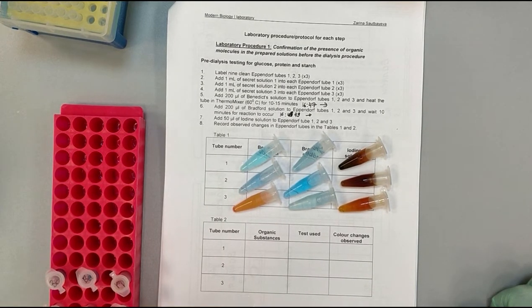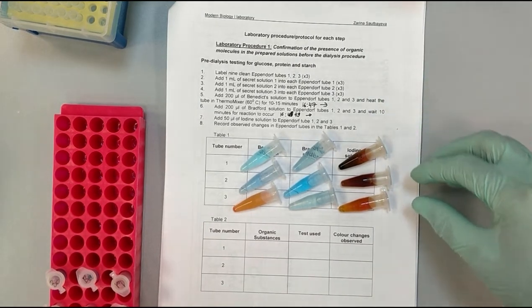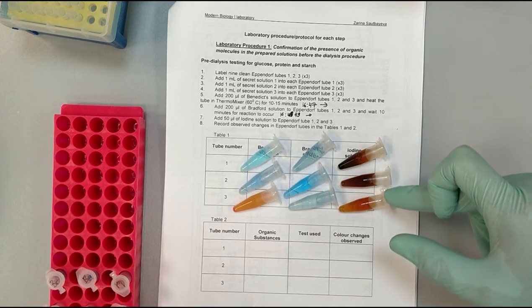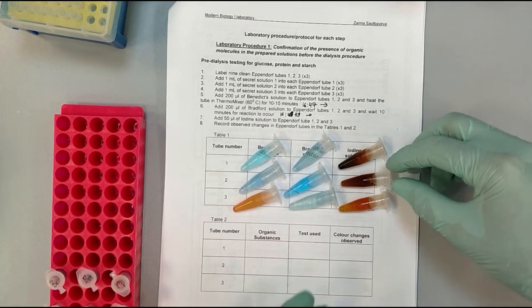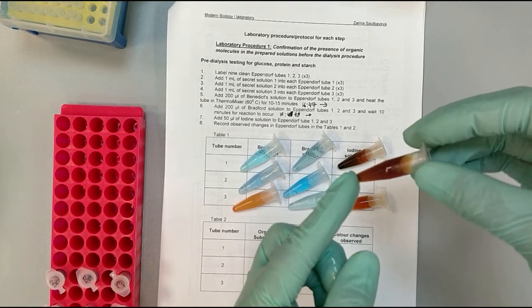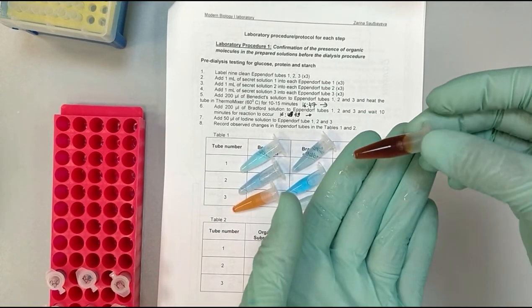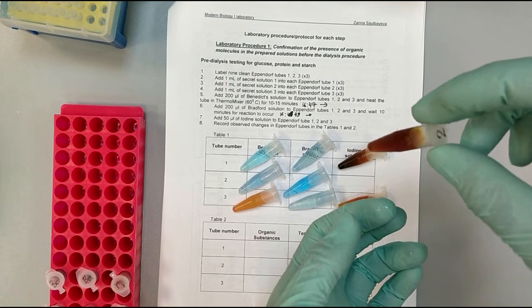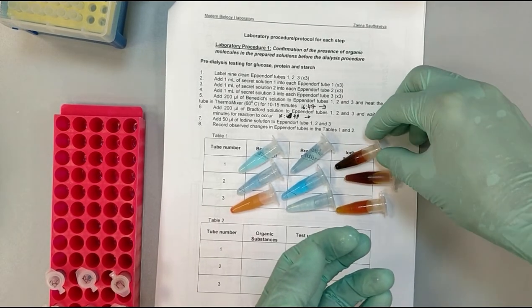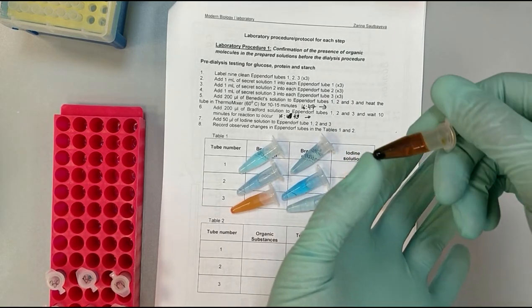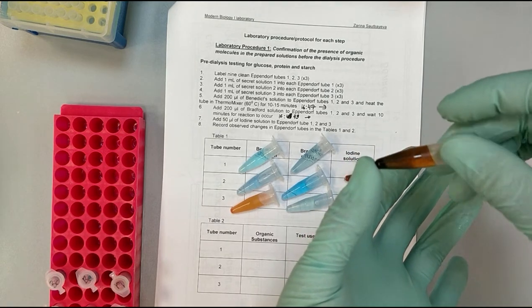So now you need to make your conclusions on what reactions happened in what tubes, so that you can write them down. So on the video, you might see these two tubes being identical, but it is not true. And if you look closer, you can see that it is actually dark, but transparent, while this has black sediments and it is not homogeneous anymore.